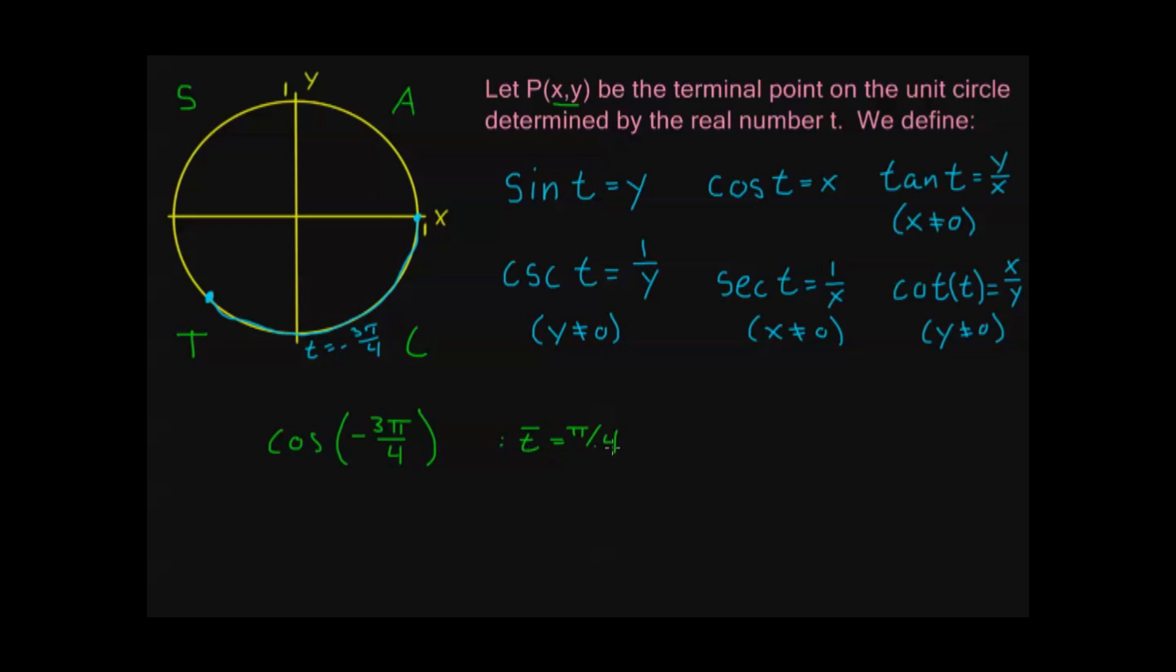Now, I know that with a t bar of pi over 4, cosine is going to be root 2 over 2. Now, all that's left for me to know is, is it going to be positive root 2 over 2 or negative root 2 over 2? And I already know that because it's in quadrant 3, only tangent and cotangent are positive there, so this is going to be equal to negative root 2 over 2. And we're done.